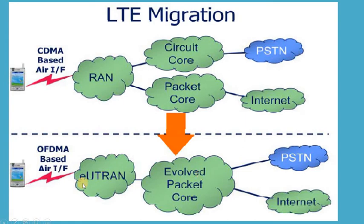Of course, they are being accessed by the EUTRAN access side, which is called the evolved universal terrestrial radio access network. While in case of 3G, it is basically referred to as RAN or WRAN.